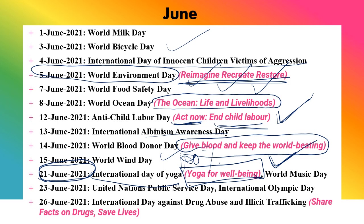23rd June is United Nations Public Service Day and International Olympic Day. 26th June is International Day Against Drug Abuse and Illicit Trafficking — this is asked very frequently in exams — and its theme was 'Shared Facts on Drug, Save Lives.'